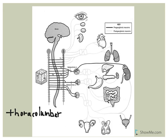It's called thoracolumbar because the pre-ganglionic neurons arise from the lateral gray horns of spinal cord segments T1 to L2. Those spinal cord sections are going to have lateral gray horns, and lateral gray horns contain visceral motor nuclei. This is specifically where the cell bodies of the pre-ganglionic neurons of the sympathetic nervous system are located.